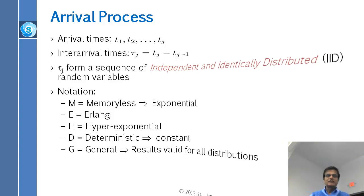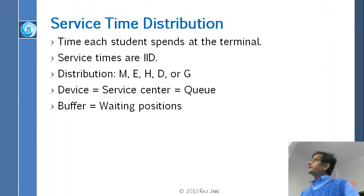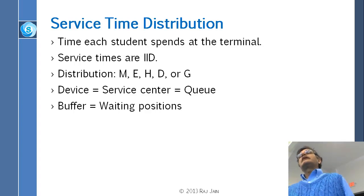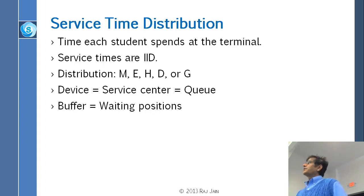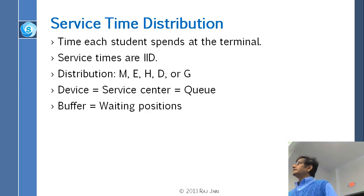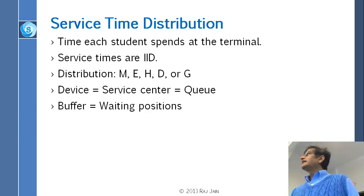Then we go to service time distribution. For being served, again there are distributions: M for memoryless, E for Erlang, H for hyper-exponential, D for deterministic, and G for general. Service times are generally assumed to be IID — independent and identically distributed.